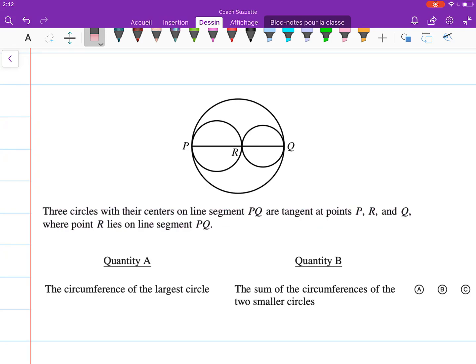We need to compare quantities A and B. Quantity A is the circumference of the largest circle. Quantity B is the sum of the circumferences of the two smaller circles.